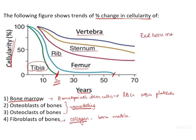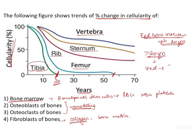In fetal life, erythropoiesis takes place in various organs such as mesoderm/yolk sac, followed by liver and spleen, and then red bone marrow. In newborns, growing children, and adults, production of blood cells is restricted to the bone marrow. Up to 20 years of age, hematopoietic stem cells in the bone marrow are actively involved in blood cell production, but after 20 years, red bone marrow gets replaced by fat, resulting in formation of yellow bone marrow.